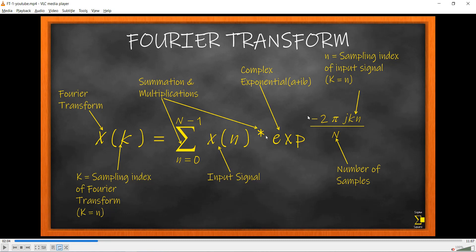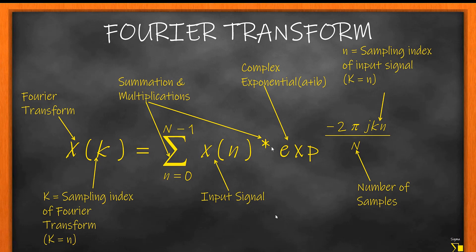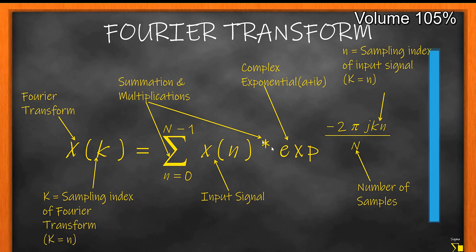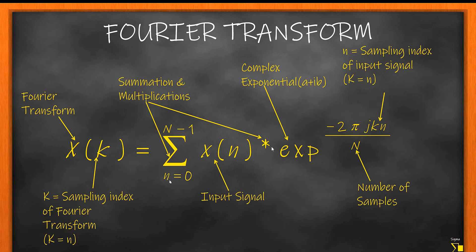Before I get to what the discrete Fourier transform is, I'll show you the formula we are going to implement. This is the DFT equation. Here x(n) is my input signal — I've taught this in detail in my DSP theory. For this programming purpose I'll briefly talk about it. This is my input signal, N is my number of samples, and k and n are the sampling indices where k is the sampling index of the Fourier transform and n is the sampling index of the input signal. This is a complex exponential, this is the summation, and this is the multiplication.